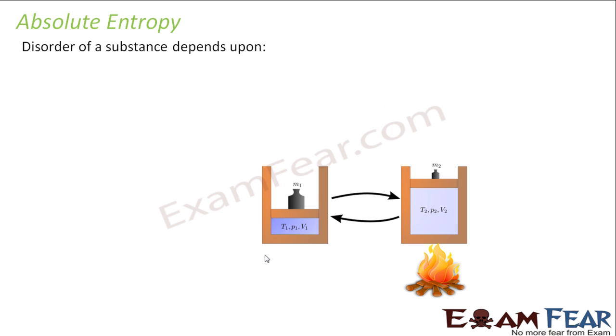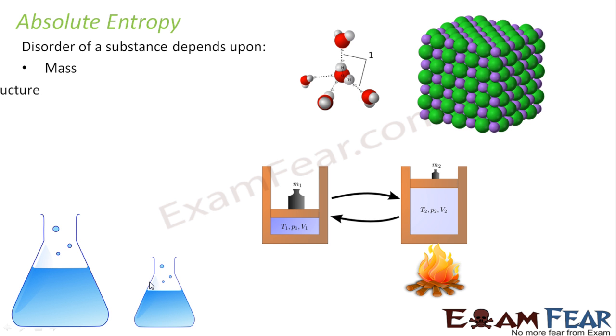For entropy of system we talk about absolute entropy. The absolute entropy depends on the mass of the system - the more the mass, the more is entropy. It depends on the molecular structure in the system, how it is structured, whether they have lattice energy bonding, crystal kind of thing, or hydrogen bonding, or there is no bonding altogether. It also depends on the temperature and pressure.